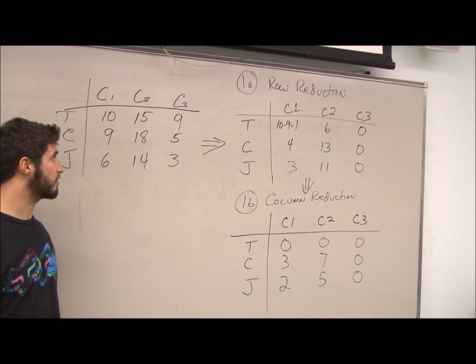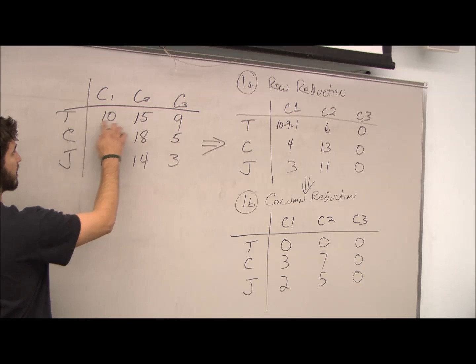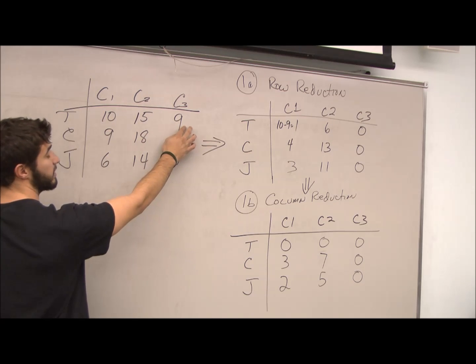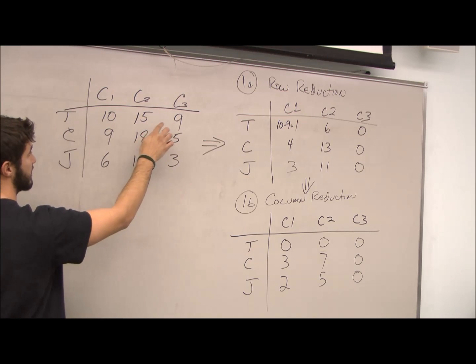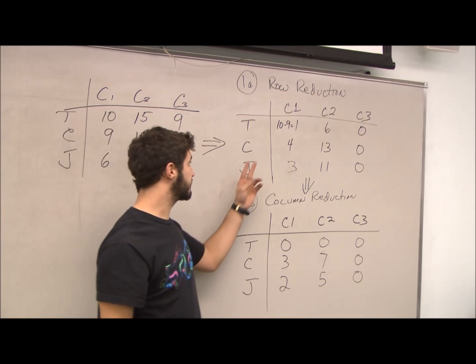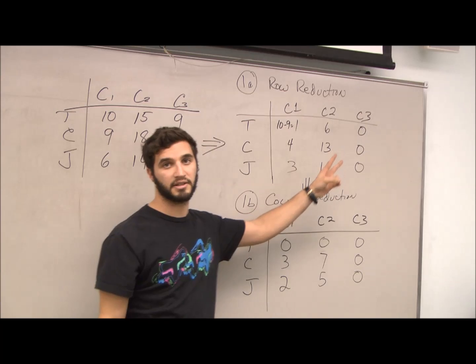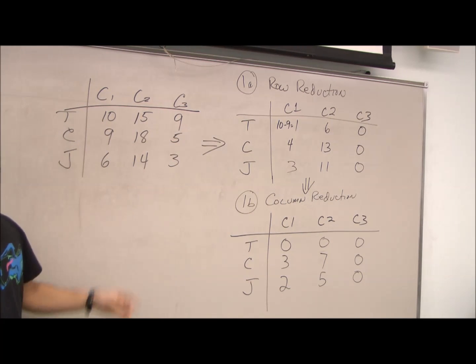You find the minimum value in each row. As you can see in the original table, the minimum value is 9. So you subtract 9 from 10, 9 from 15, and 9 from 9. And that will transform into 1, 6, and 0. And then you will follow the same steps for the next two rows.